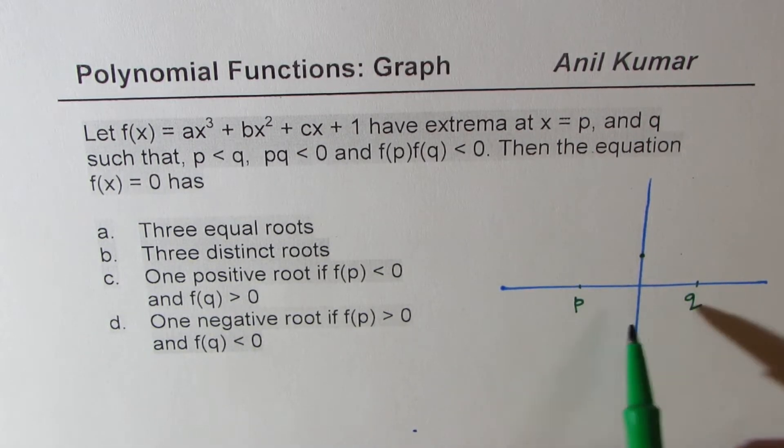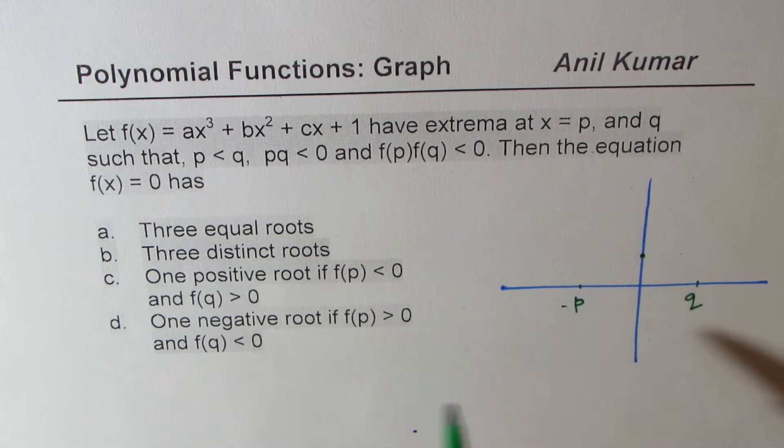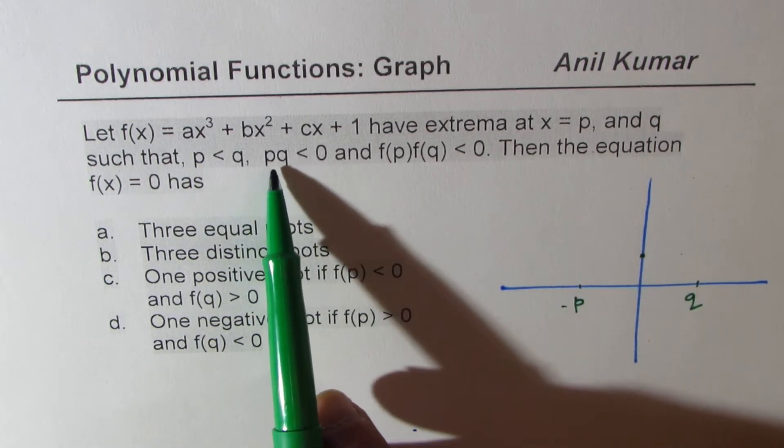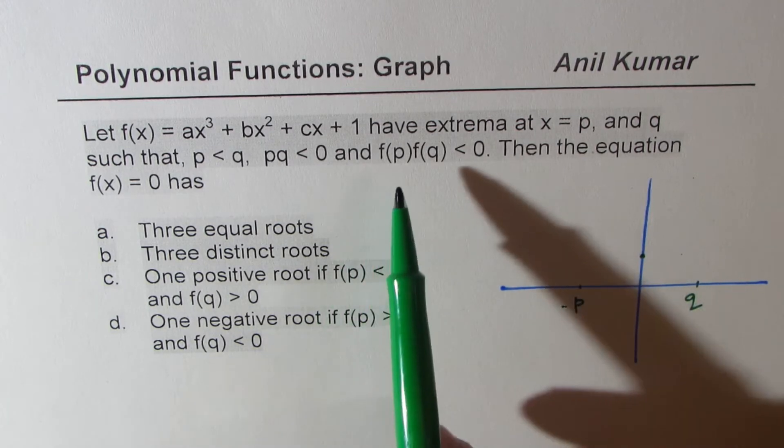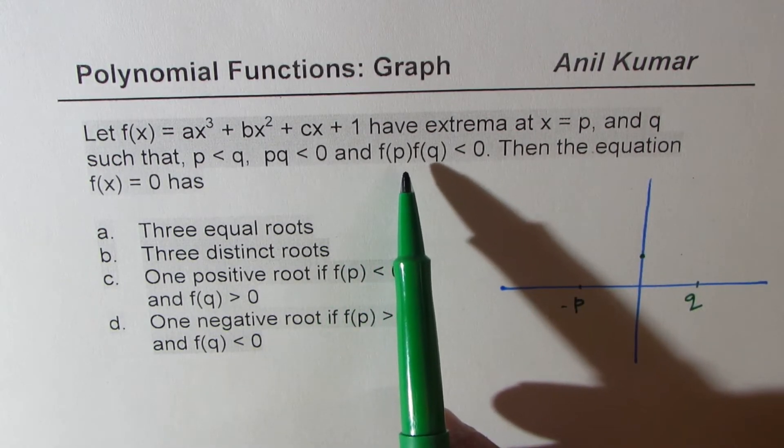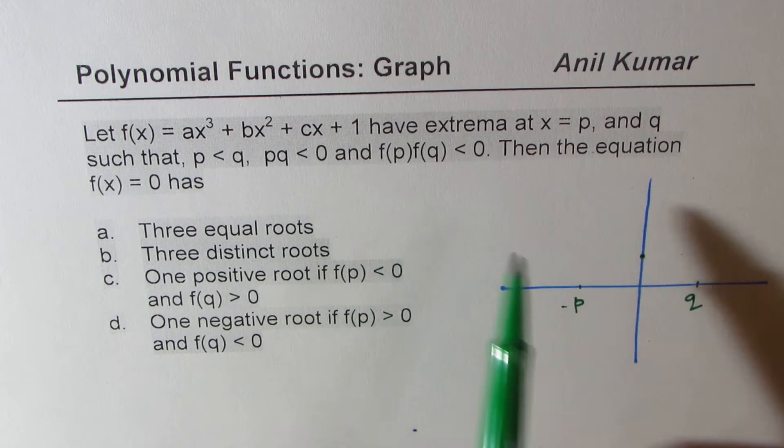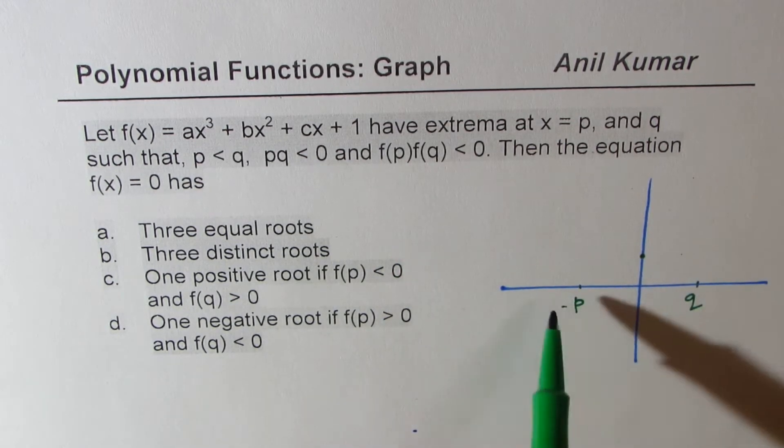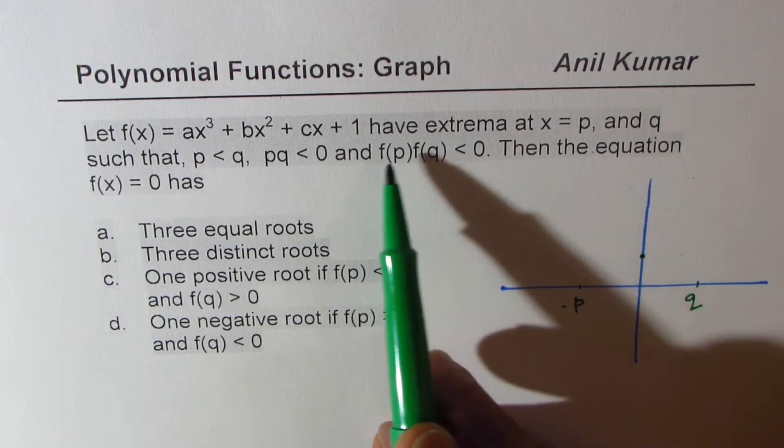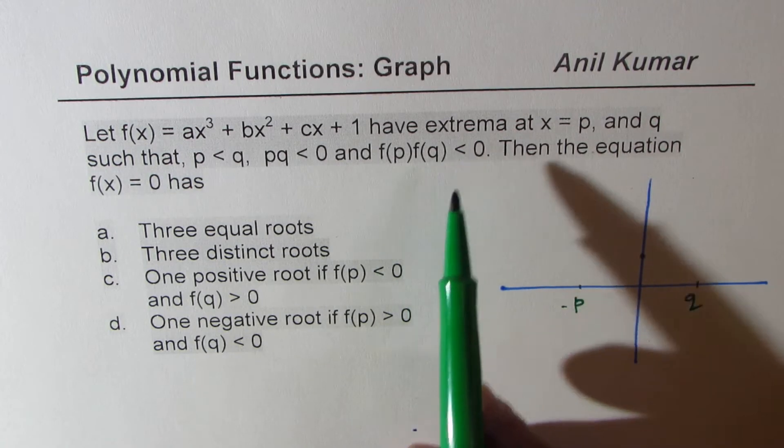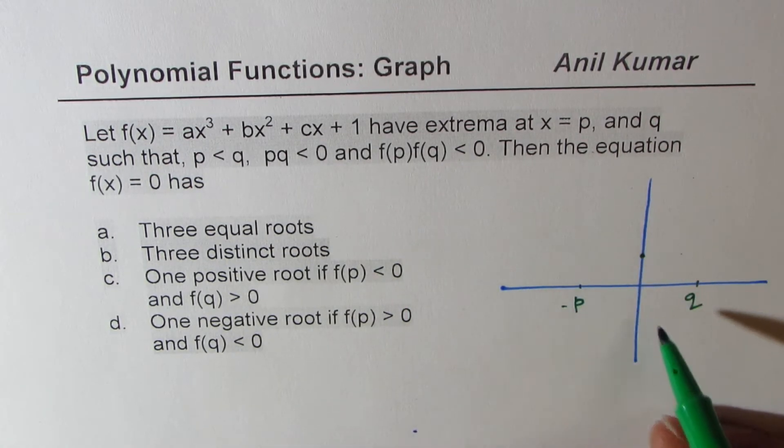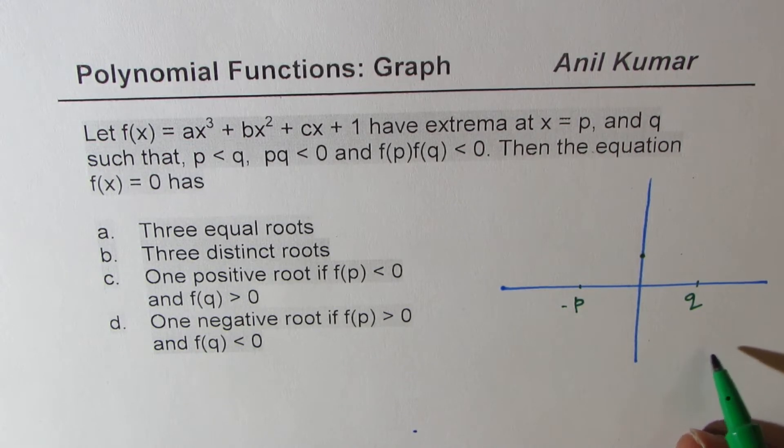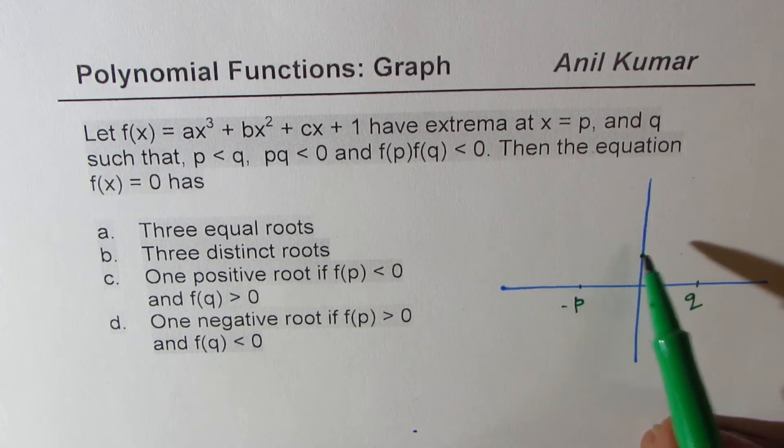So likewise, of course, this will be a negative value. And product of p, q will be less than 0 if this is negative, and that is positive. And we also know that value of function at these two points, when multiplied, is also less than 0. That means we have something on top of x line, and something on the bottom of x line. So there are two scenarios.